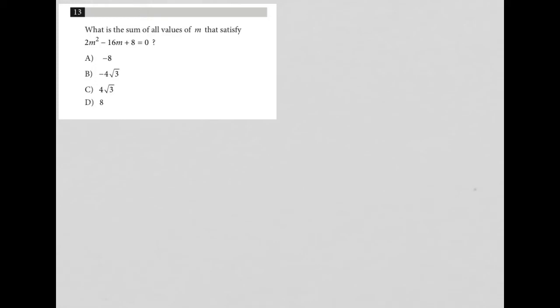So this question says, what is the sum of all values of m that satisfy 2m squared minus 16m plus 8 is equal to 0? So I'm going to write this down, 2m squared minus 16m plus 8 equals 0.